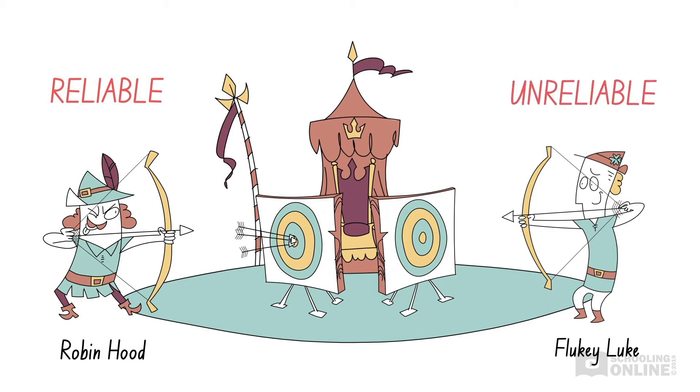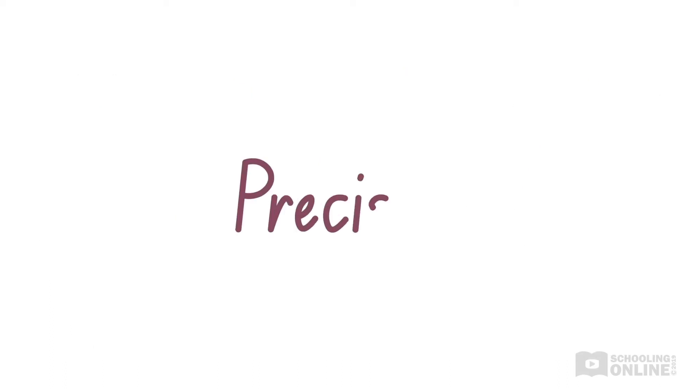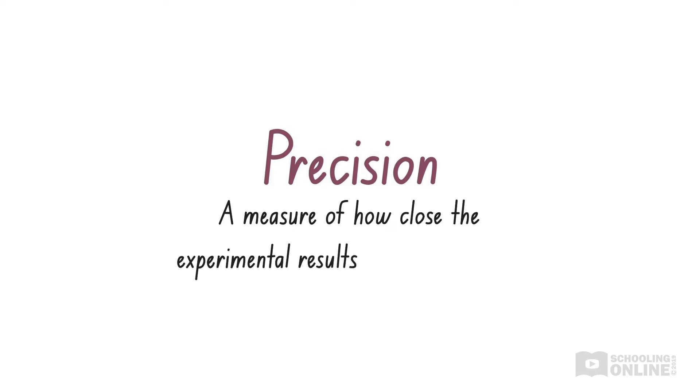Luke is not a reliable archer, since his arrows go all over the place. Another key term is precision, which is a measure of how close the experimental results are to each other. If the results of an experiment are precise, then the experimental method is reliable.